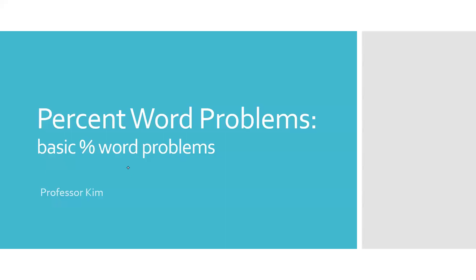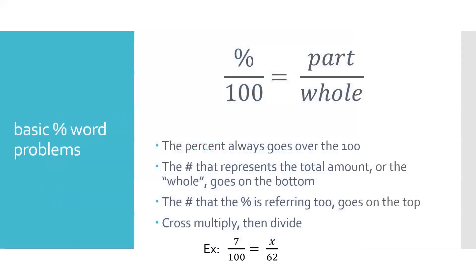Hello, this is Professor Kim and today I'm going to do another type of percent word problems. These are the basic percentage word problems where in some classes you might have been told part over whole or portion over base. There are multiple ways to do this — I prefer to use proportions. I'll put percent over 100 and then equals the part over the whole. The percent always goes over 100 because percent means out of 100. If it says 45, you just put 45 over 100.